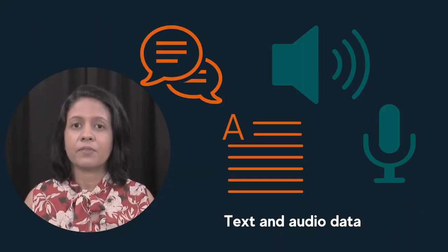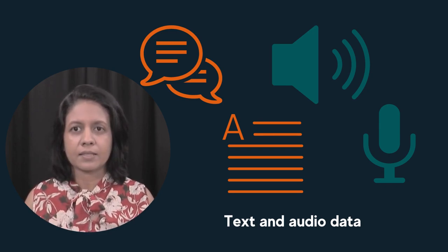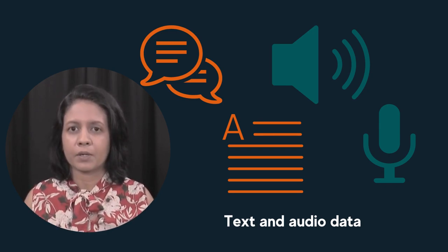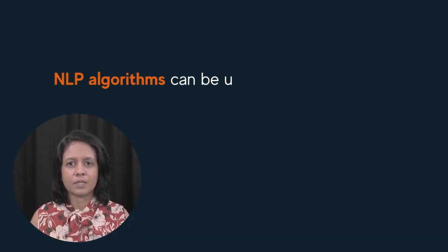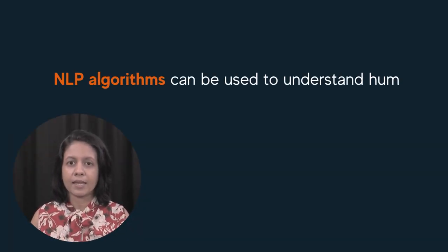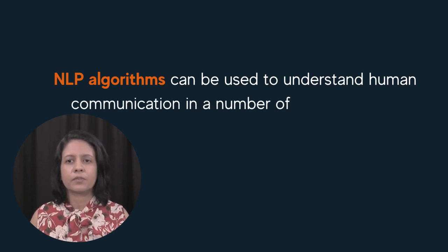There are many different types of text and audio data available to analyze or use for NLP projects. This includes text from documents, messages from social media posts, emails, reviews written by consumers, and conversations between humans or humans using chatbots on computers. NLP algorithms can be used to understand human communication in a number of different ways for different purposes.